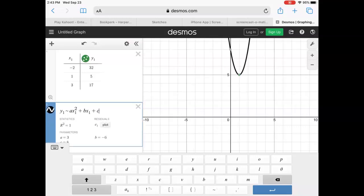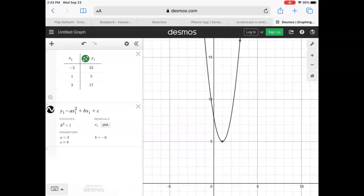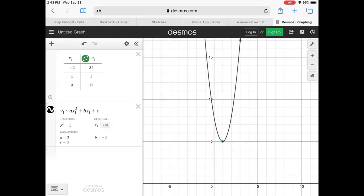So now you can see that my graph over here matched those points, and then if you look down at the bottom, it says parameters. So my parameters say that a is 3, b is negative 6, and c is 8.